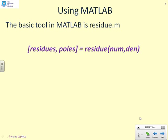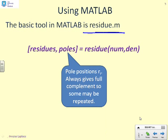How does MATLAB work then? The basic tool covered in this video is just a single tool, residue.m. The command line you can see given here is [residues, poles] = residue(num, den). First of all, poles. Fairly obvious, poles will be a vector which contains the pole positions, ri. It will always give the full complement, so if you've got repeated poles, it will list that pole more than once as appropriate.